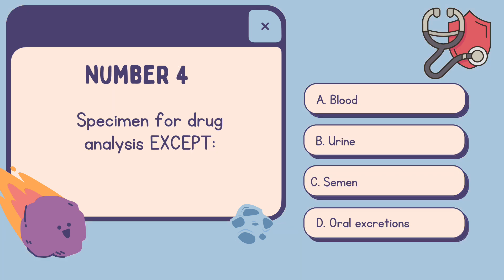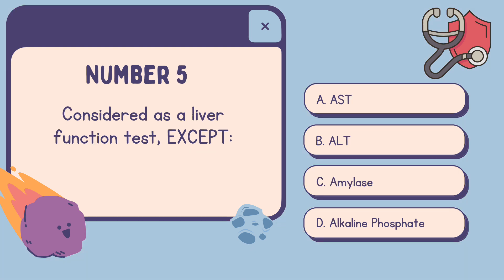Number 4: Specimen for drug analysis, except — A. Blood, B. Urine, C. Semen, D. Oral Excretions. The correct answer is C, Semen.